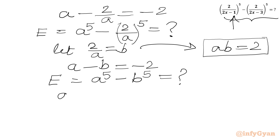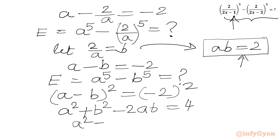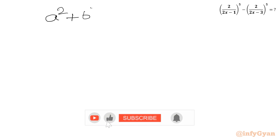Now I can find (A - B)² on both sides to calculate A² + B². We have A² = (-2)² = 4. Since AB = 2, we write A² + B² - 2(2) = 4, so A² + B² = 4 + 4 = 8.